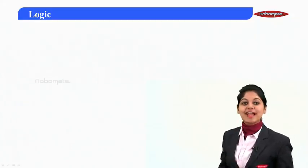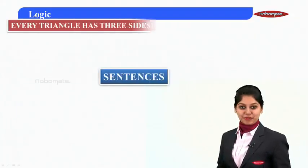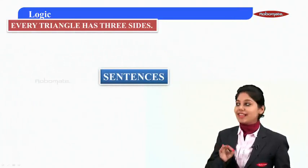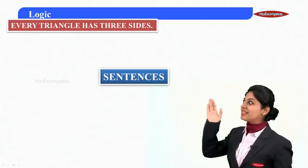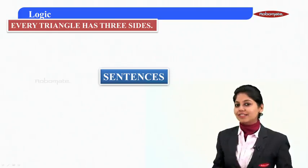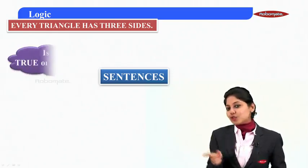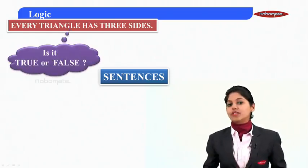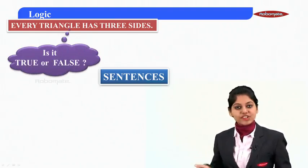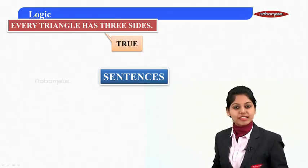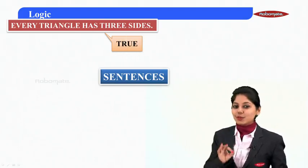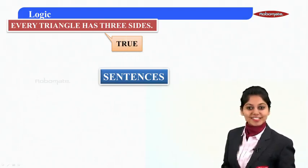Here we have some sentences in front of you. The first one: every triangle has three sides. If I ask whether it's true or false, what will you say? Obviously, each triangle has three sides, and that simply means the given sentence is a true sentence.